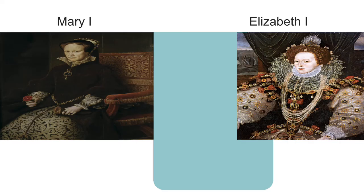Henry VIII died in 1547. His only son, Edward VI, succeeded at age nine, and England was governed by men whose rivalry led to a revival of feudalism. These men were extreme Protestants. Instead of keeping the English Church aloof, as Henry VIII had done, they made it part of the Protestant Reformation.